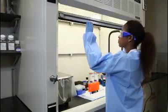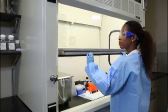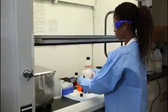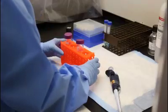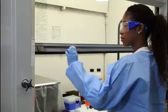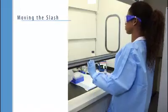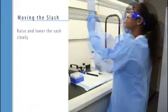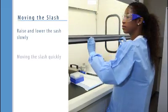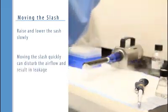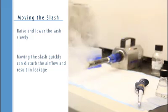Sash height is important for maintaining proper airflow and to keep those working in it and around it safe. When working in the hood, the sash should be at the certification mark. Raising and lowering the sash should be done slowly. Moving the sash quickly can disturb the airflow and result in leakage.